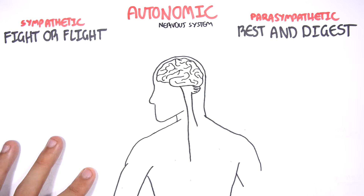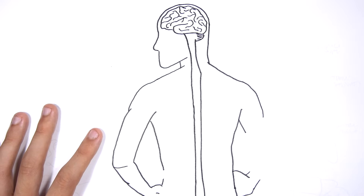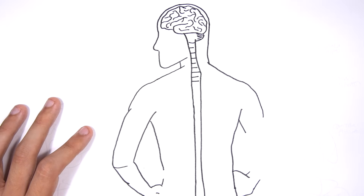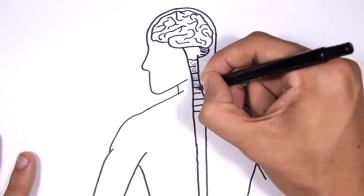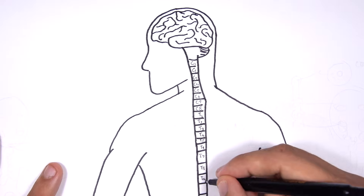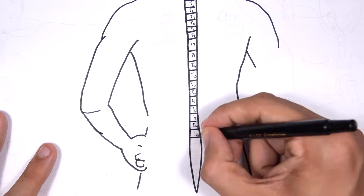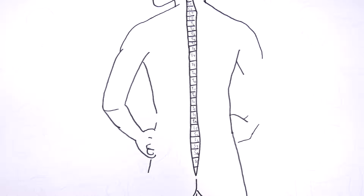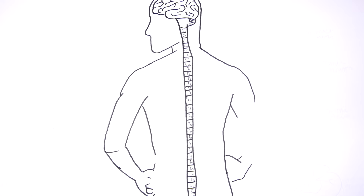The spinal cord is divided into 31 segments. We have 8 cervical, 12 thoracic, 5 lumbar, 5 sacral, and 1 coccygeal segments. These are important because the sympathetic and parasympathetic nerves arise from these spinal cord segments. Remember that the autonomic nervous system is involuntary and that we have no control over it. Now let us look at the purpose and function of the sympathetic and parasympathetic nervous system and how they differ from each other.